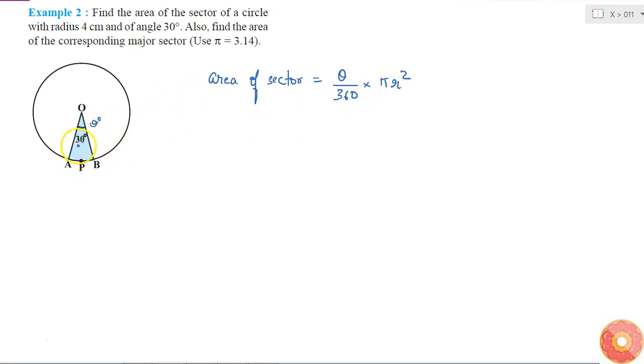Now, here I am given theta equals 30 degrees. If I put the value of theta here, that equals 30 by 360 multiplied by pi which is 3.14 into r squared. Given the radius is 4 centimeters, r squared will be 16.